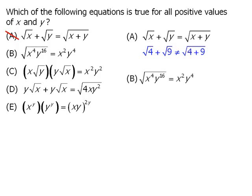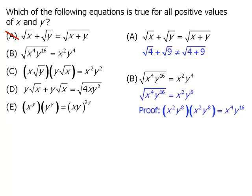On to the second equation. This equation is not necessarily true either. The square root of this expression is actually equal to x squared times y to the power of 8, and our proof is as follows. So we'll eliminate the second equation.